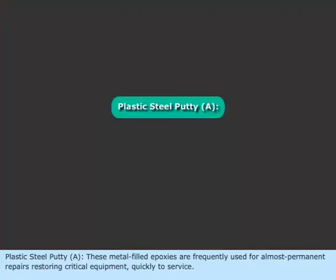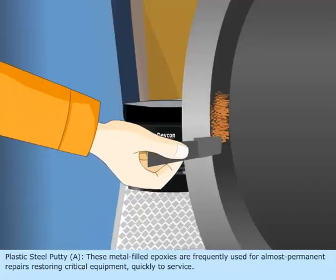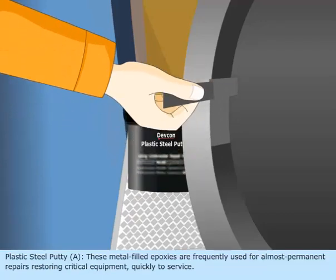Plastic Steel Putty: These metal-filled epoxies are frequently used for almost-permanent repairs, restoring critical equipment quickly to service.